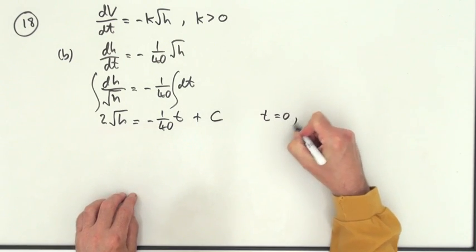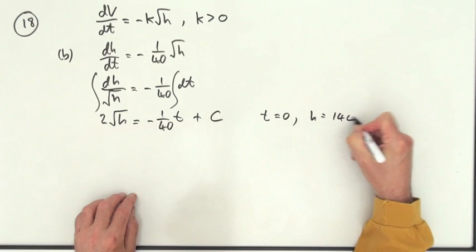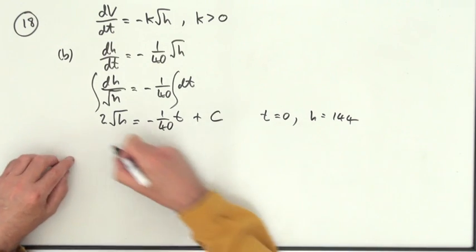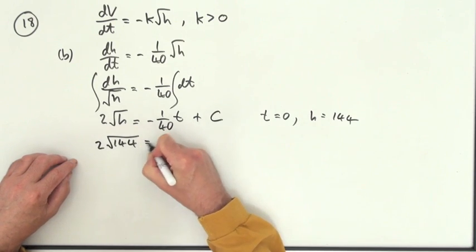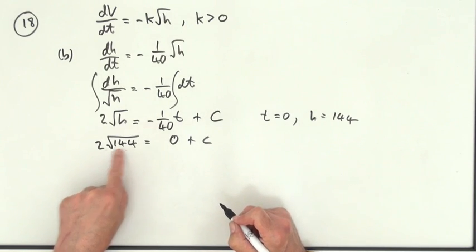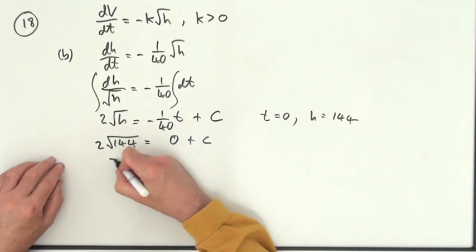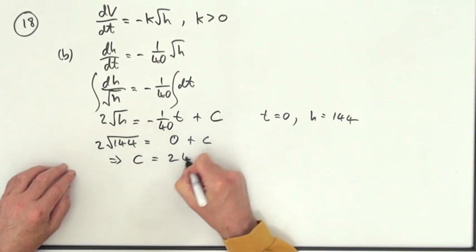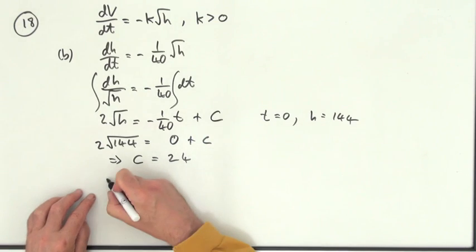Initially, when T equals 0, H equals 144. So popping that in, we've got 2 root 144, and if T is 0, that's 0 plus C. So that's 12 times 2 is 24, so that means that C is 24.